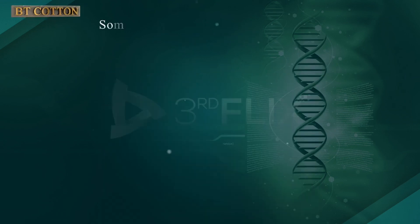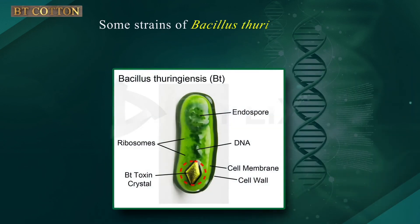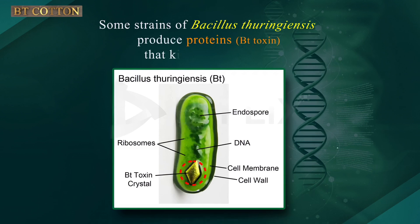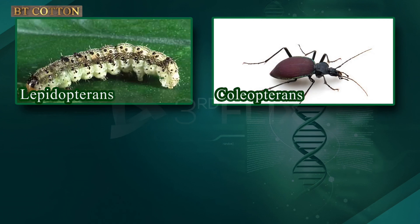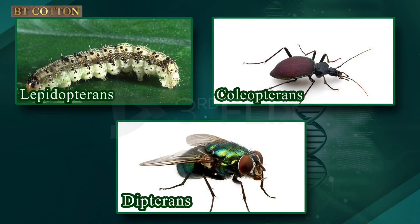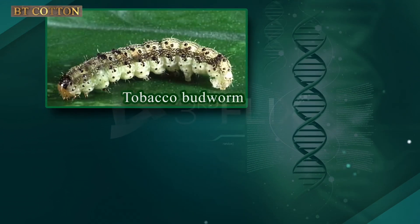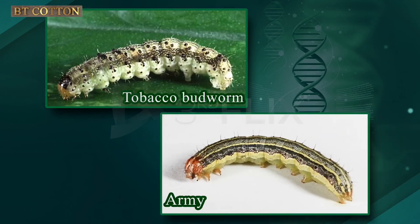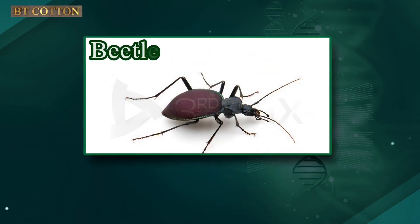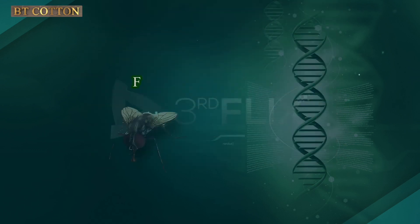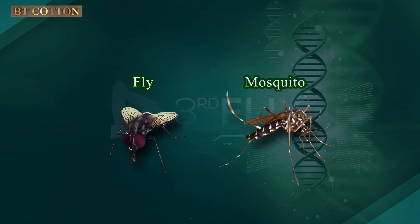Some strains of Bacillus thuringiensis produce proteins called BT toxin that kill certain insects. Such insects are Lepidopterans, Coleopterans, and Dipterans. Lepidopterans include tobacco budworm and armyworm. Coleopterans are beetles. Dipterans are flies and mosquitoes.